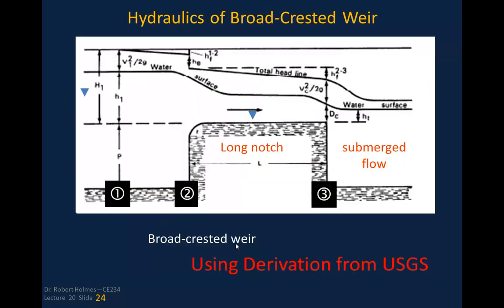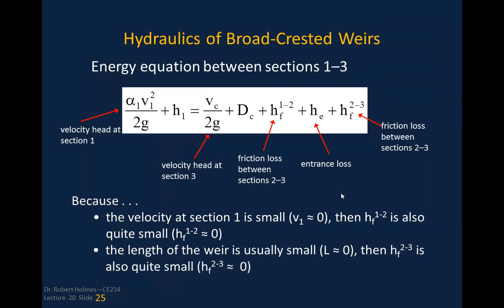The broad-crested weir has no aeration — the flow stays in contact with a longer crest length L, with no nappe springing free. We assume critical depth occurs at the downstream end of the broad-crested weir. The development uses sections one, two, and three to derive the flow equation, similar to the sharp-crested weir approach.